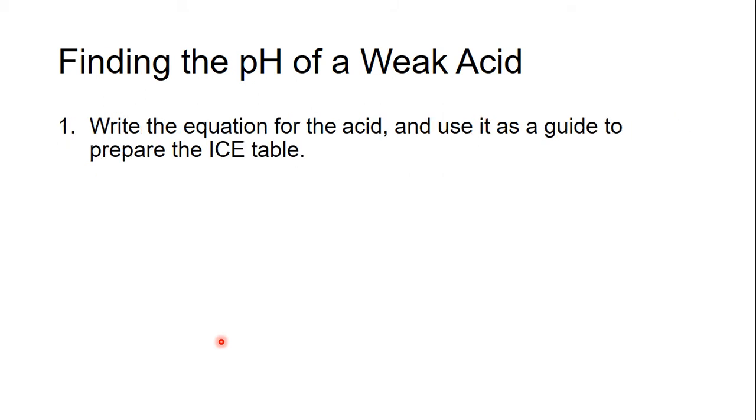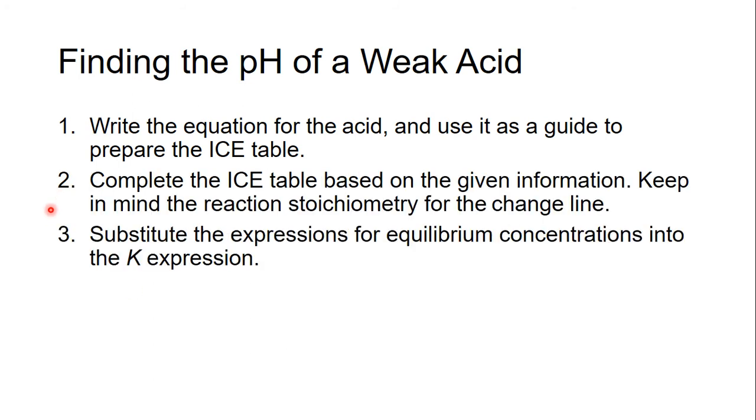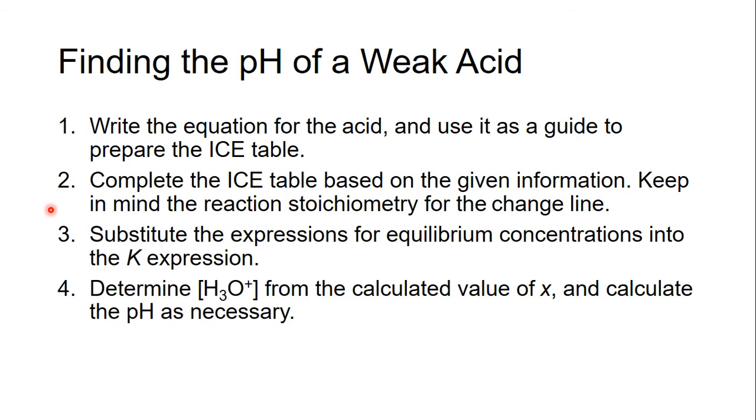So we set up an ICE table for our weak acid equation. Then we solve the ICE table with our information given. We have a K expression. We should be able to do that by now. We substitute our equilibrium expressions into our K, and we determine H3O+ from there. Calculate pH, and check our answer.